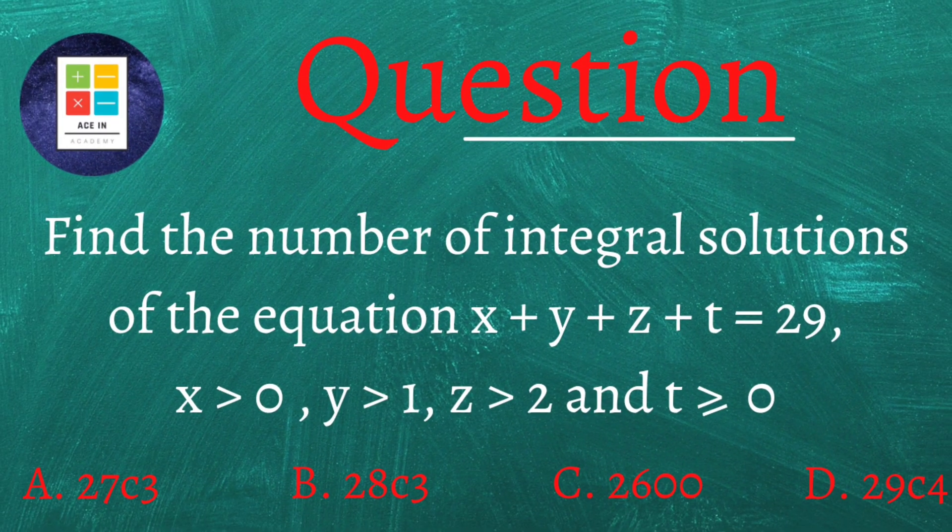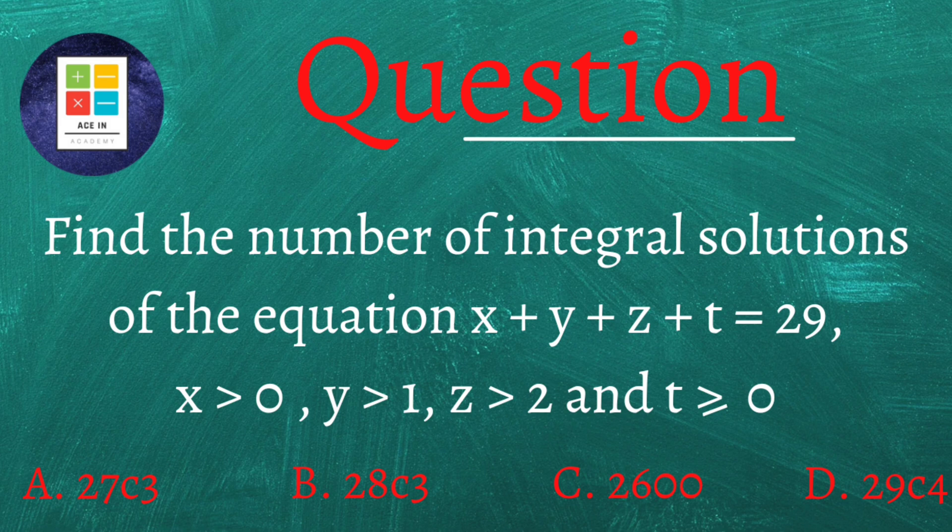Find the number of integral solutions of equation x plus y plus z plus t equals 29 such that x is greater than 0, y is greater than 1, z is greater than 2, and t is greater than or equal to 0.